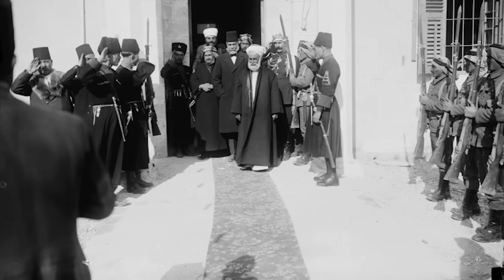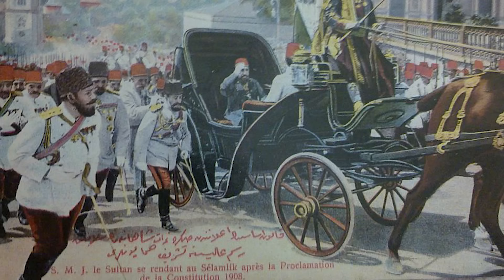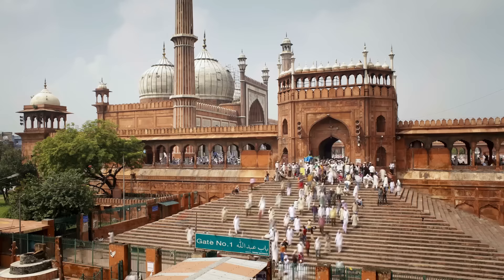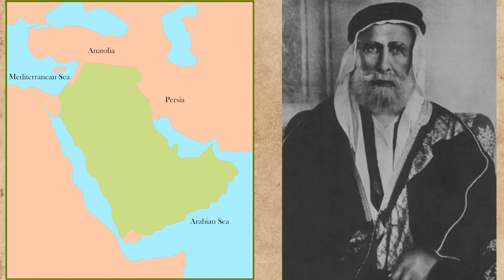For the British, the prospect of a prominent Muslim leader such as Sharif Husayn being on their side against the Ottomans was invaluable. The Ottoman Khalif's call for a jihad against the Allies would have been especially worrisome to the British, considering India, their prized colony, was home to more than 60 million Muslims, who would naturally have their loyalties aligned to the Khalif in Istanbul.